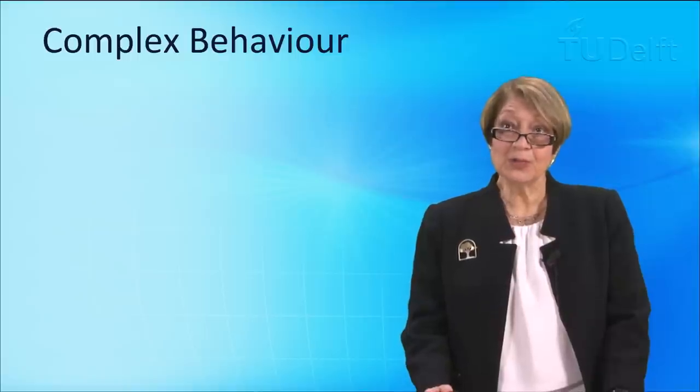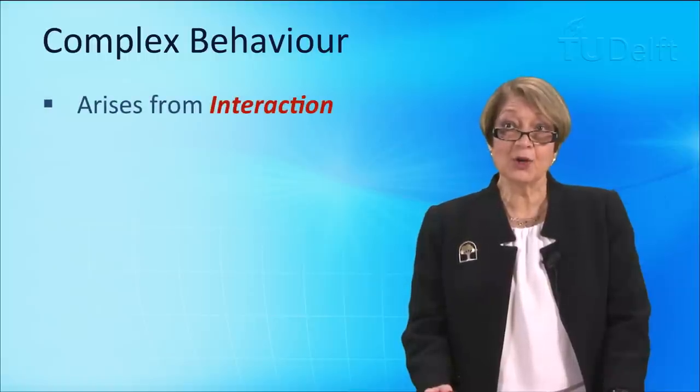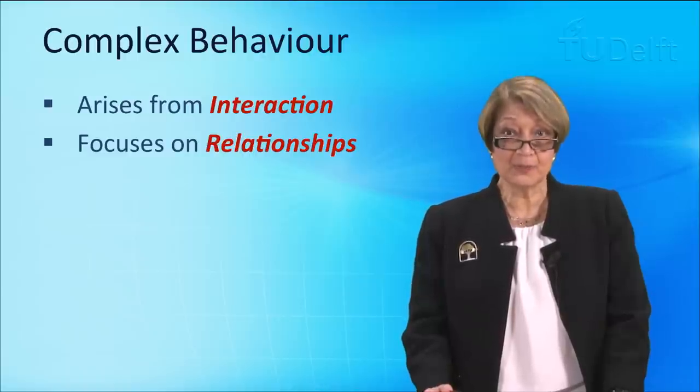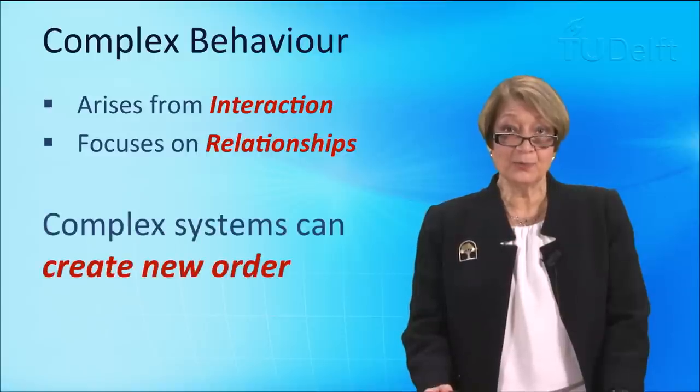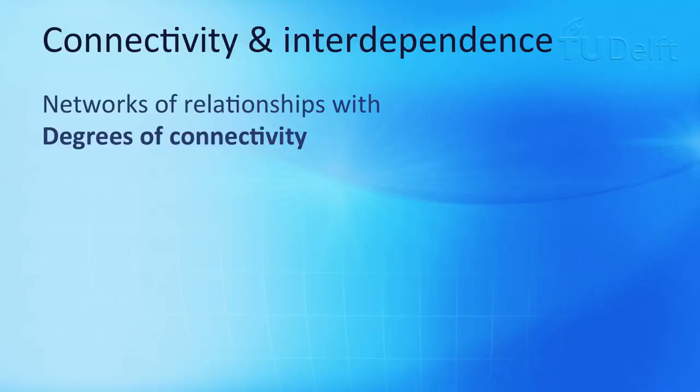But first of all to understand complex behaviour: complex behaviour arises from interaction. Complexity theory focuses on relationships, not on the entities themselves but on their relationships between them. The other key characteristic of complexity theory is that complex systems can create new order. This is the jargon and I hope that you will understand what that means over the course of the next two videos.